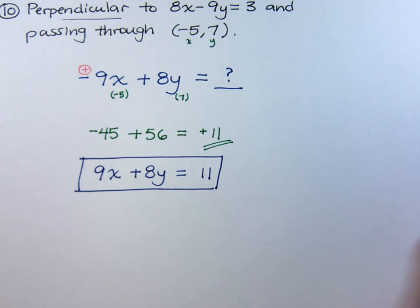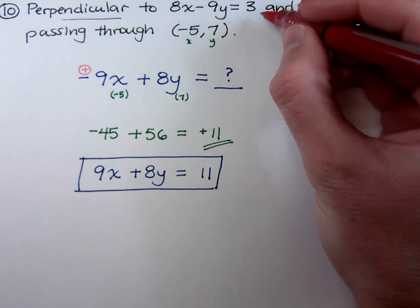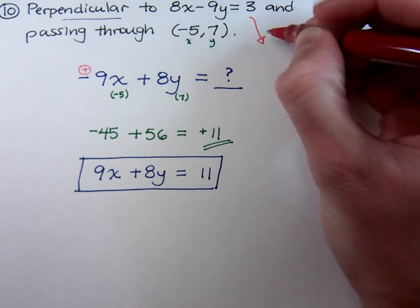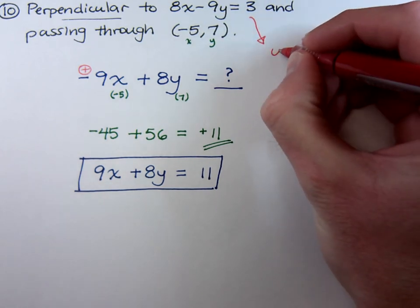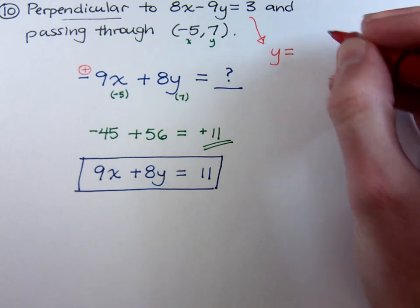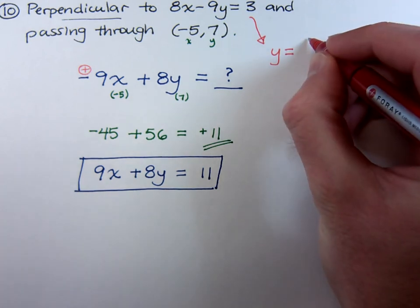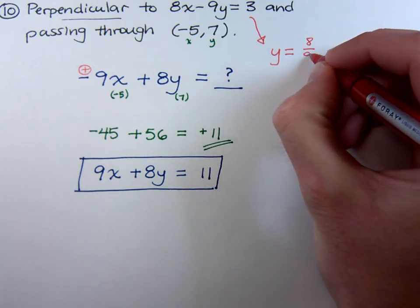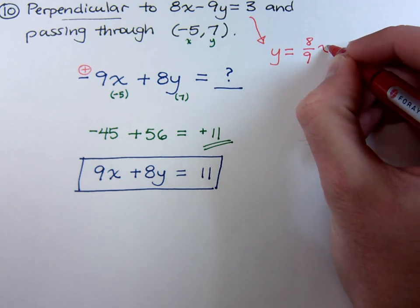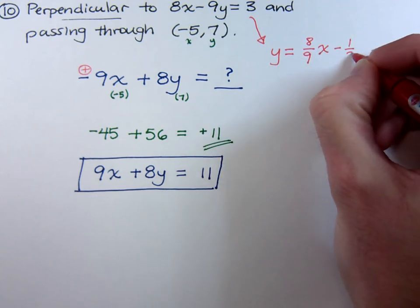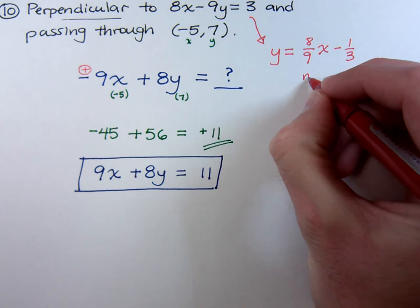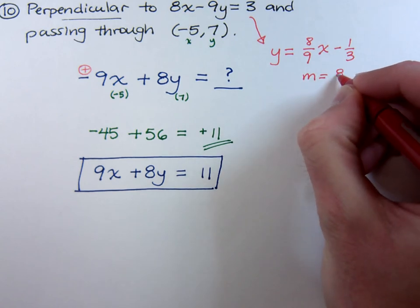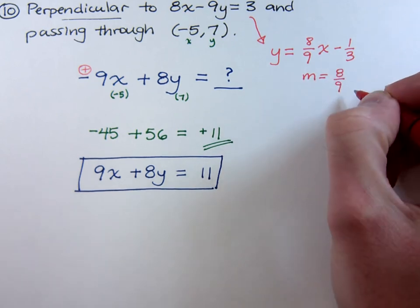Now, just so that you know that I'm not lying to you about perpendicular lines, if you solve this guy for y, take this out on the side and solve it for y, and you would end up with the following. You would have positive 8 ninths x minus 1 third. And the slope for this guy would be, of course, 8 over 9. That's why I solved it for y to begin with.